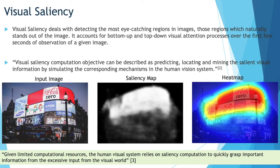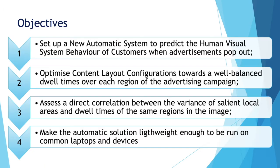Why is visual saliency important? Because given limited computational resources, the human visual system relies on it to catch the most important information from the huge amount of input from the visual world. The objectives of our work are: to set up a new automatic system to predict the human visual system behavior of customers when advertisements pop out; to optimize content layout configurations toward a well-balanced dwell time over each region of the advertising campaign; and to assess a direct correlation between the variance of the salient local areas and dwell times of viewers over the same regions. We also want to make the solution lightweight enough to run on common laptops and devices.